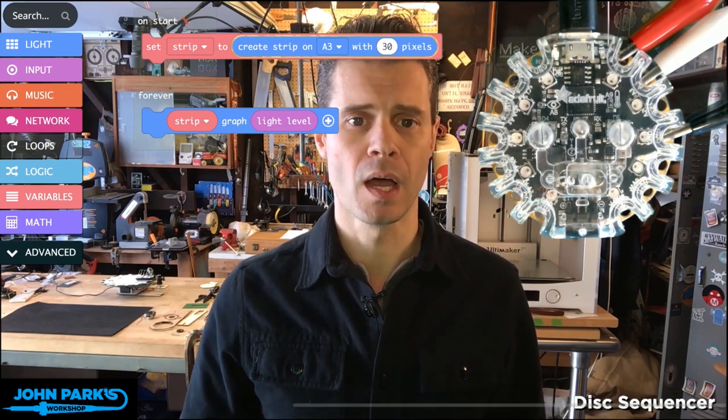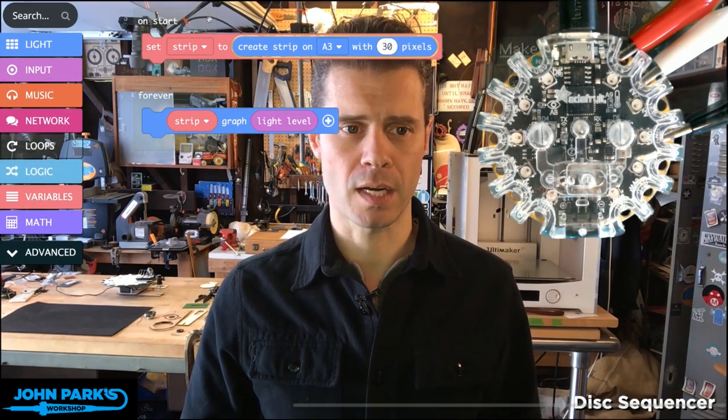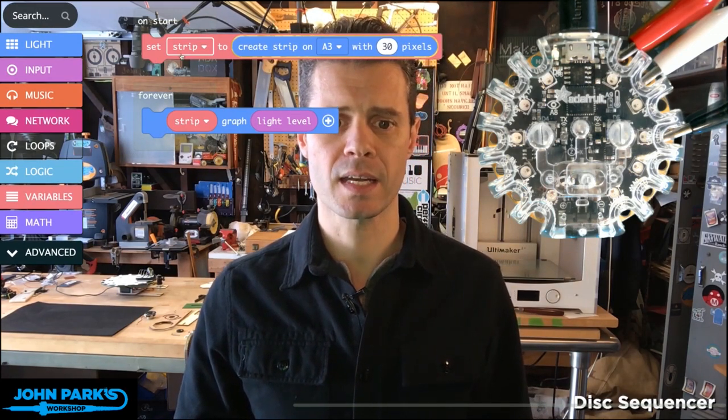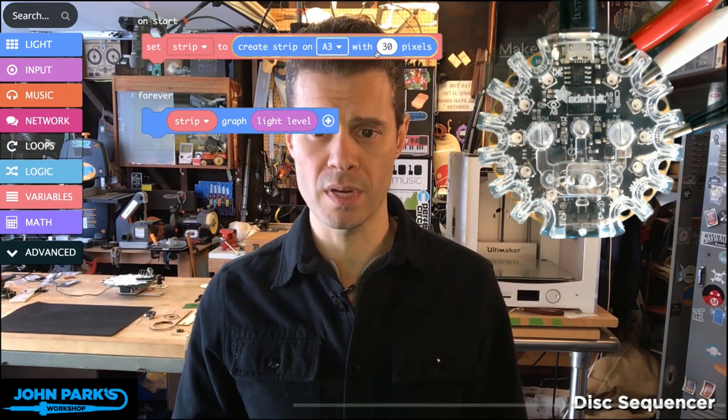Here you can see in my Make Code session what I have is an on start block where I set a strip to a neo pixel strip on pin A3 that has 30 pixels.